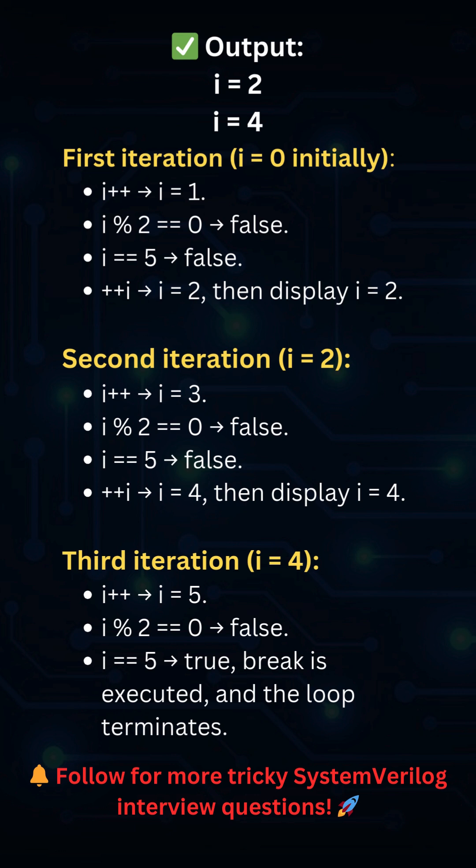Third iteration: i++ makes i = 5 and the first if condition is not true. Now i == 5 is true, so the break statement executes and the loop terminates.